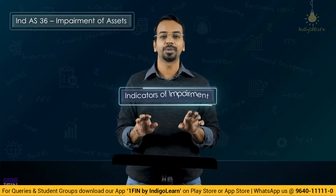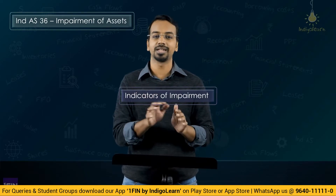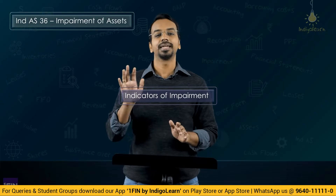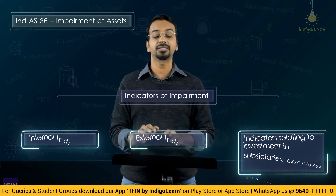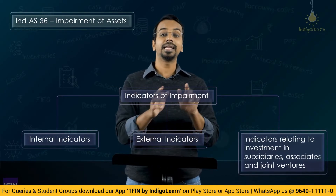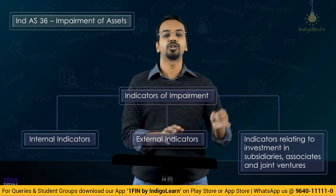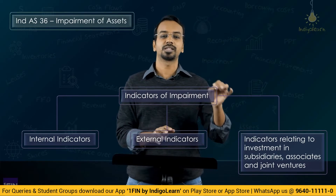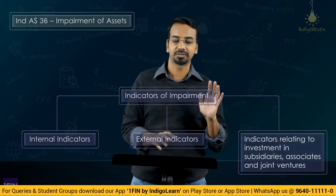Whenever we have to check for impairment of assets, we have to see whether there are any indicators of impairment. Under indicators, we learned internal indicators, external indicators, and indicators related to investments in subsidiaries, etc.